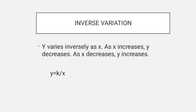Inverse variation. Y varies inversely as X. As X increases, Y decreases. As X decreases, Y increases. The formula is Y equals K over X, so this time we divide.